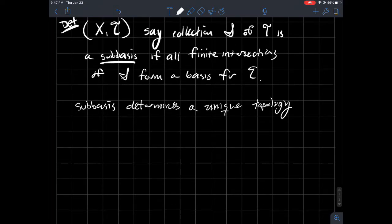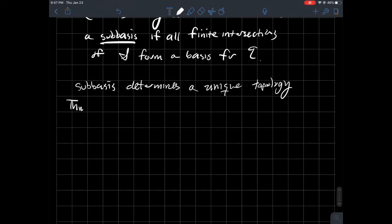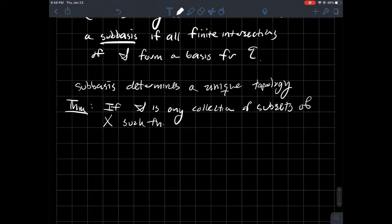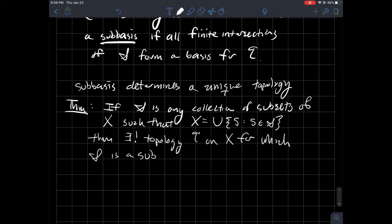And so what's the requirement then? The thing that you need to know, this theorem here is if fancy S is any collection or family of subsets of your set X, such that the union of all the stuff in S gives you X back. So X is equal to the union of regular S, where S is an element of fancy S. Then there exists unique, the exclamation point means unique, there is a unique topology T on X for which fancy S is a subbasis.